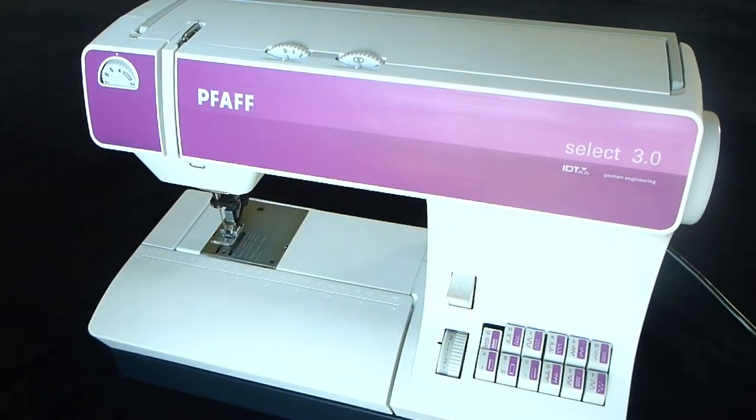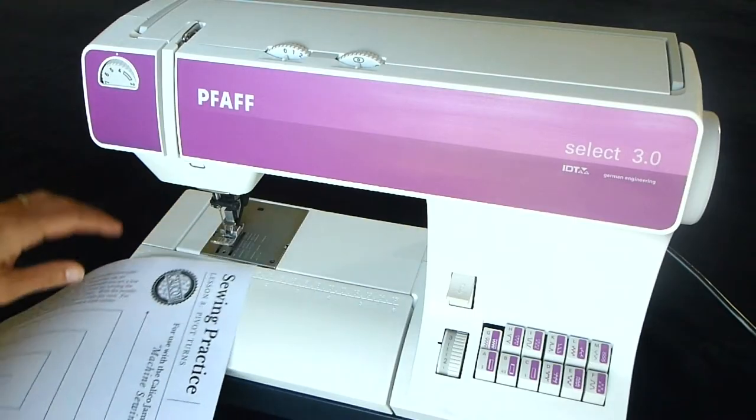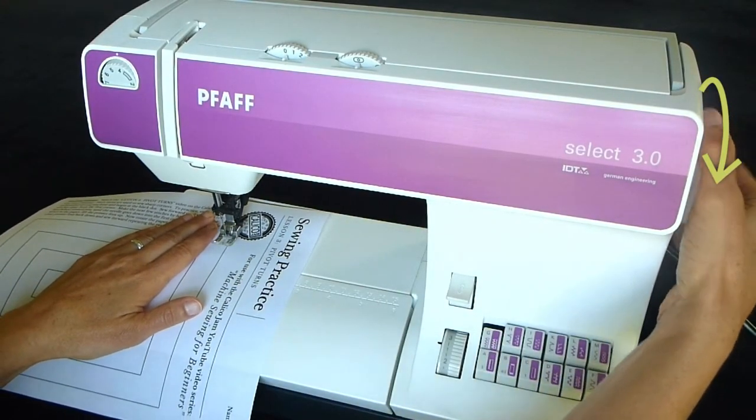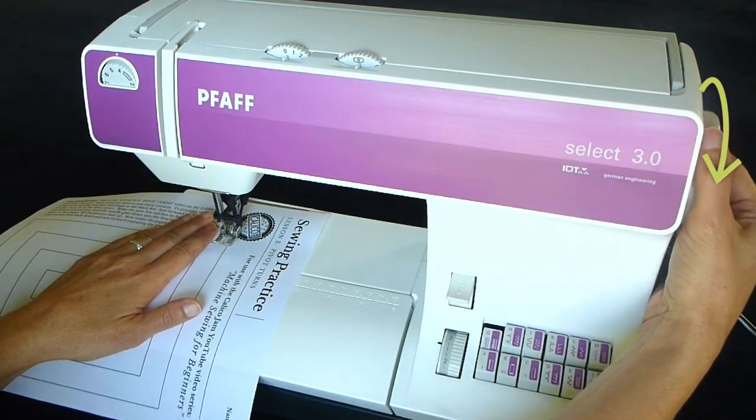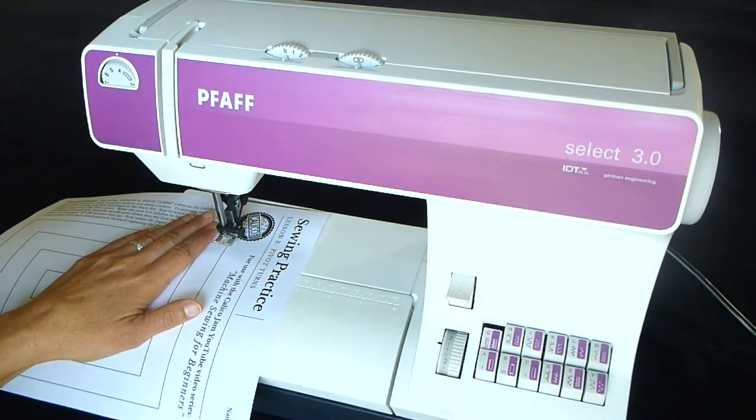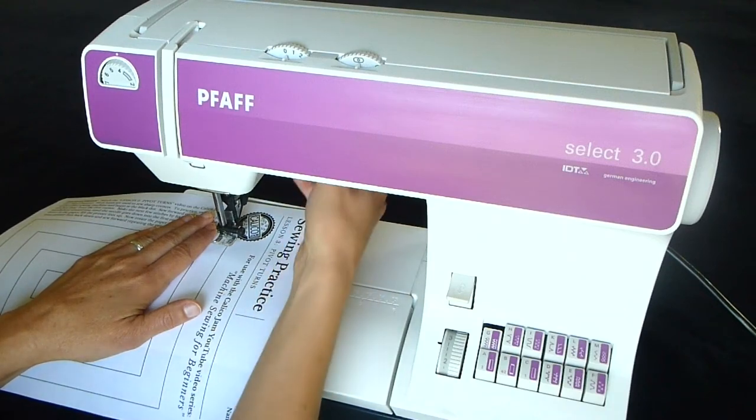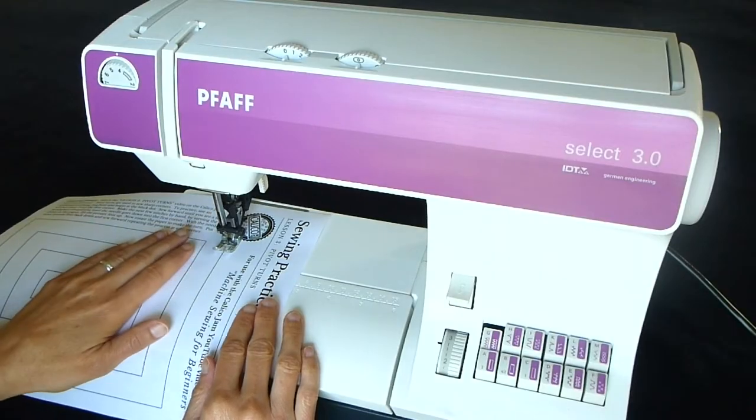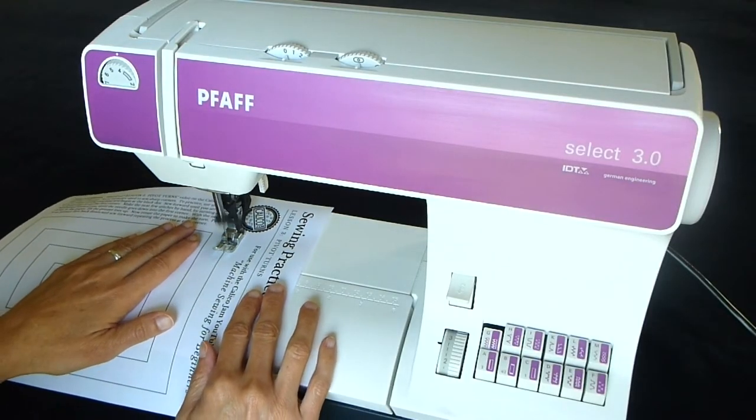Place the lesson three practice paper under the presser foot and turn the handwheel toward you to put the needle down into the black dot in the upper left corner of the design. Lower your presser foot and press gently on the foot pedal to begin sewing forward on the line across the top.